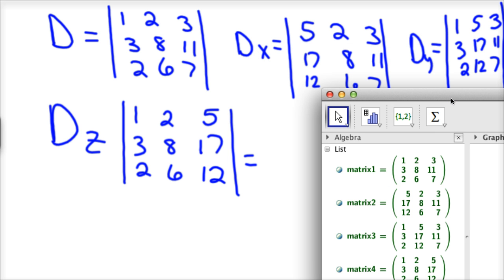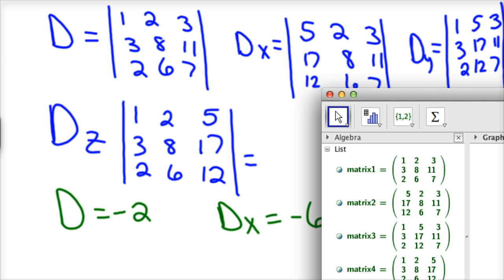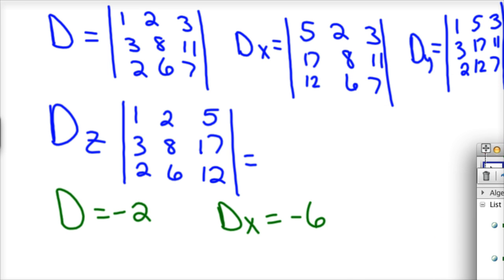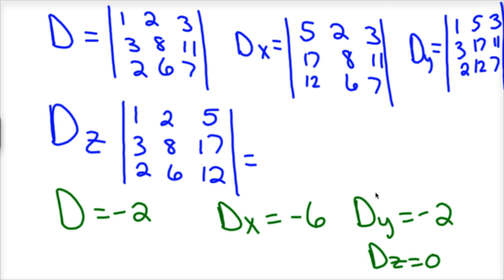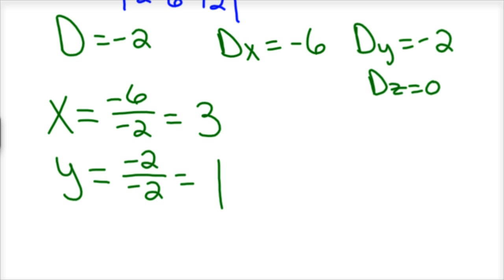So D is -2, Dx is -6, Dy is -2, and Dz is 0. So I know then, once I have those four determinants calculated, I know x is Dx over D, so that would be -6 over -2 which is 3. Y is Dy over D, which is -2 over -2, so that's 1. And z is 0 over -2, which is 0. And so I know those three planes intersect at the point (3, 1, 0).